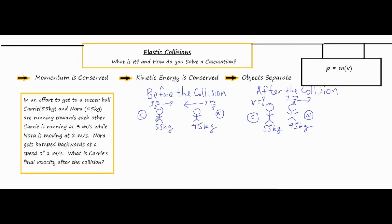I drew my little stick figures with a C for Carrie and an N for Nora, so I remember which person is which. I drew arrows showing which direction they're going — since they're running towards each other, one person is going to the right and one to the left. I put the masses right underneath them to keep track of all my numbers. Because Nora's velocity is going to the left, I made sure that had a negative next to it.